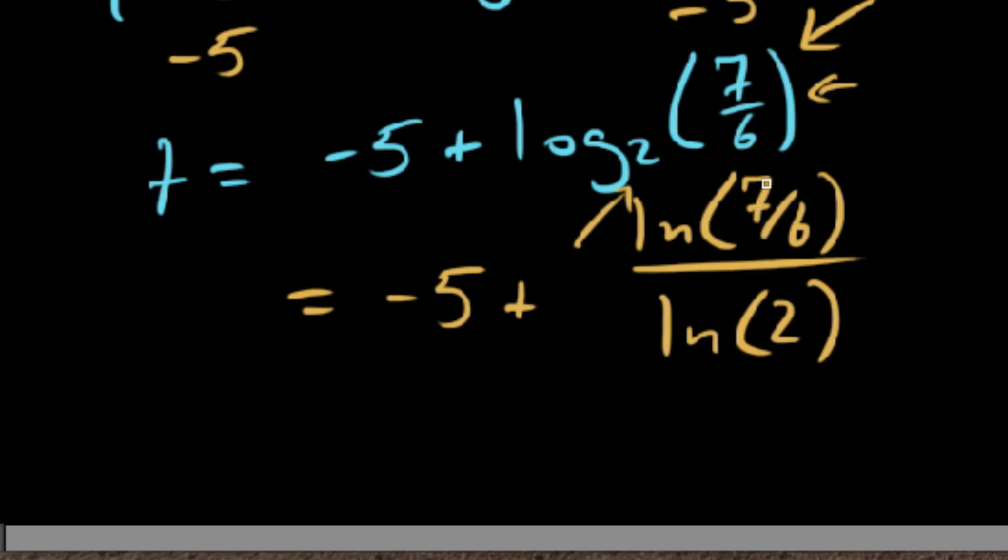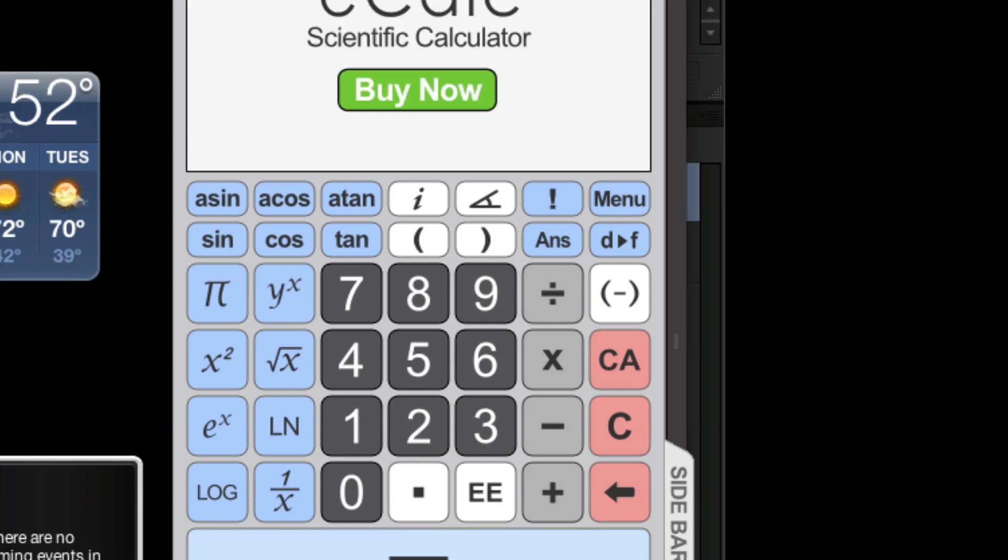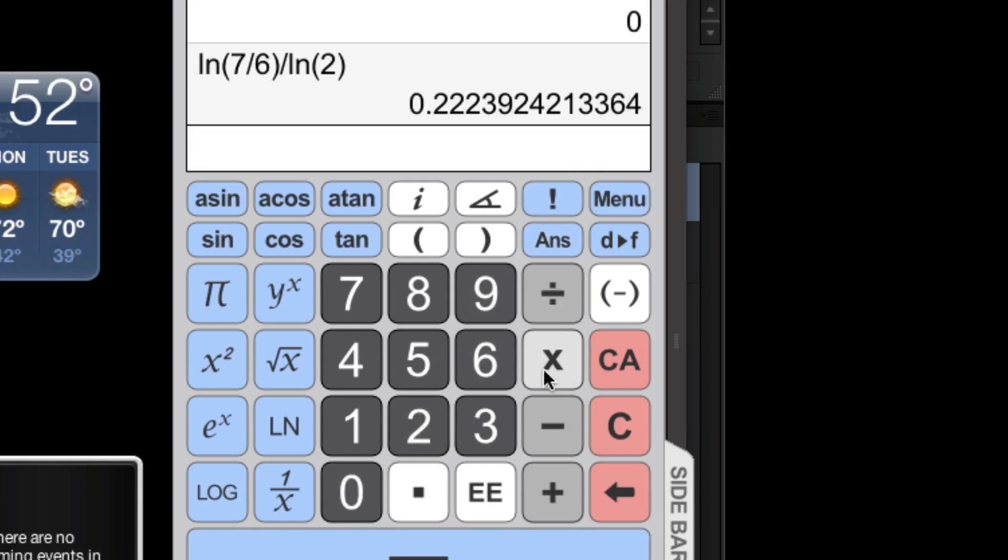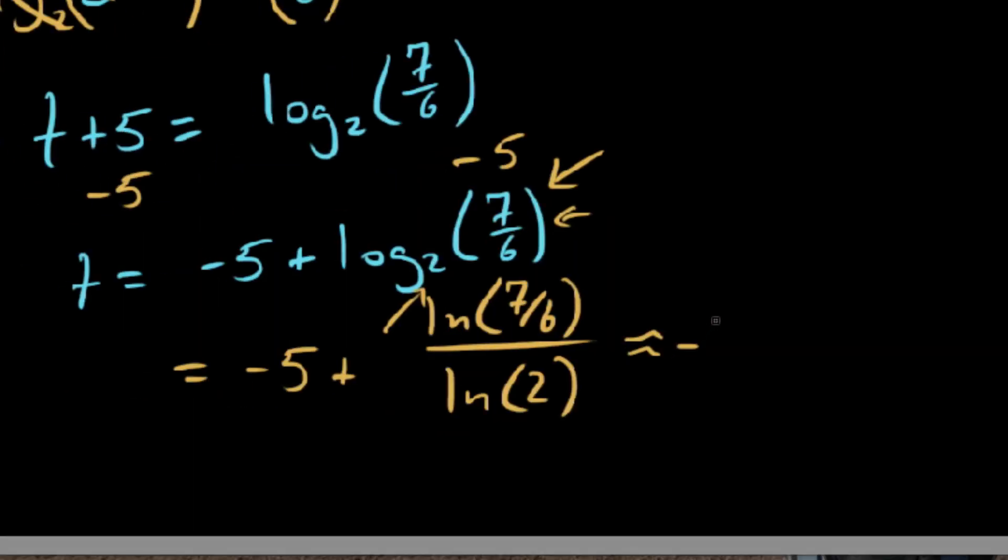So we can use a calculator for the rest of this. Let's go ahead and start with that ln of 7 sixths divided by ln of 2. So we say ln of 7 divided by 6, end parenthesis, and we're going to divide this by ln of 2. We get this, and then we're going to add this, so plus negative 5. So we get about negative 4.777. And this can easily be checked by plugging it back up into the original expression. For the sake of time I'm going to go ahead and move on to the second example.